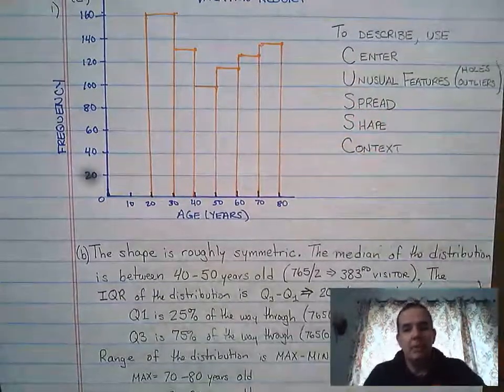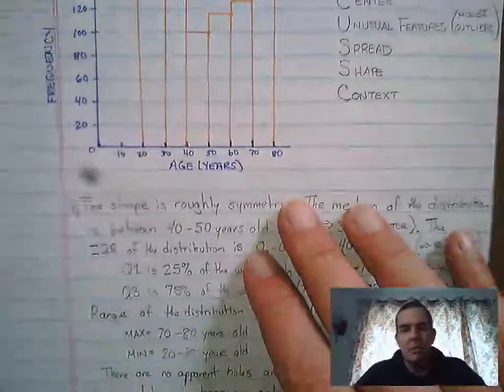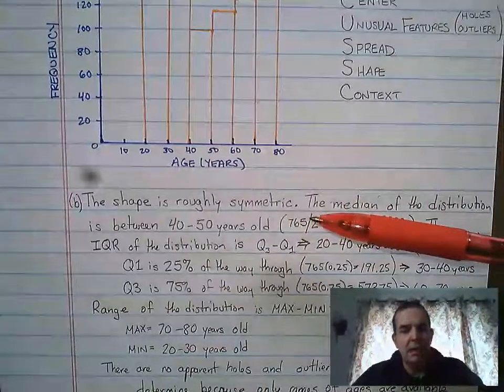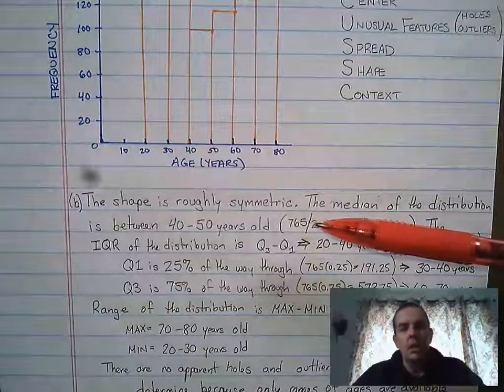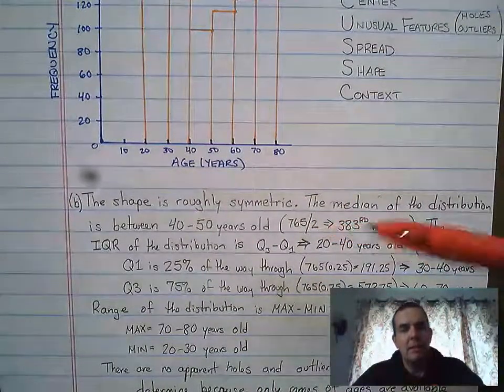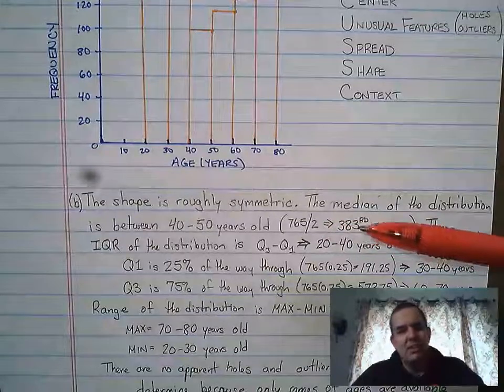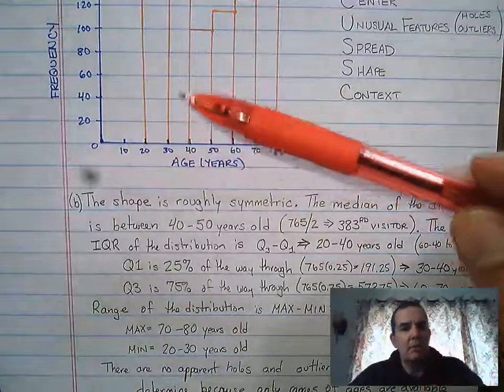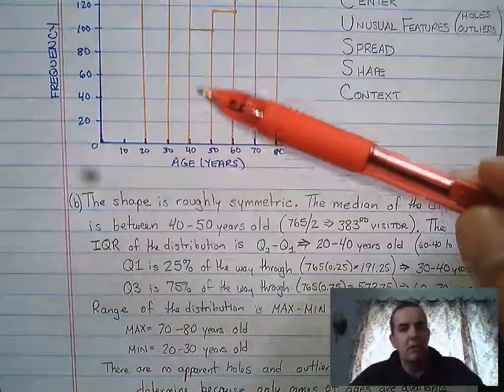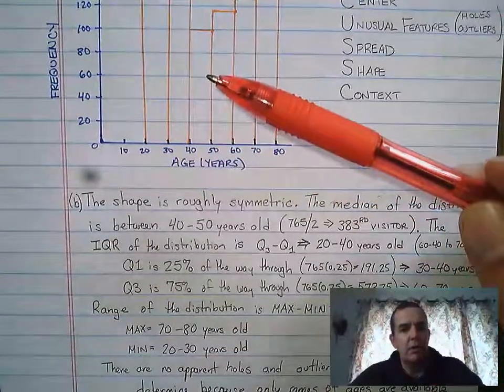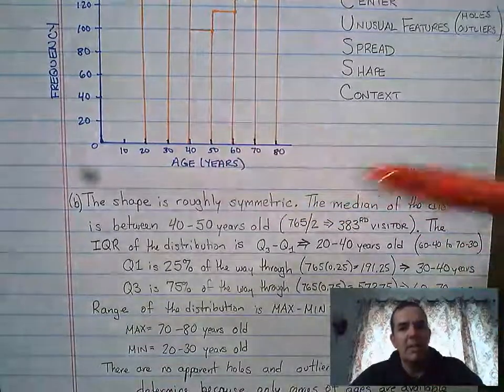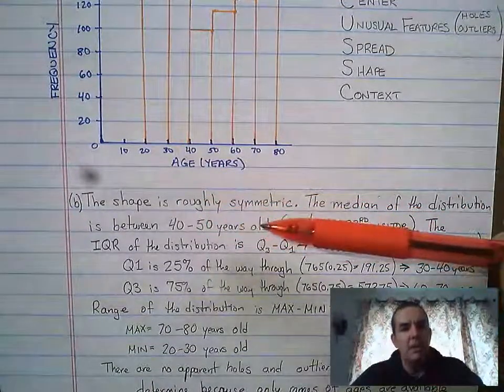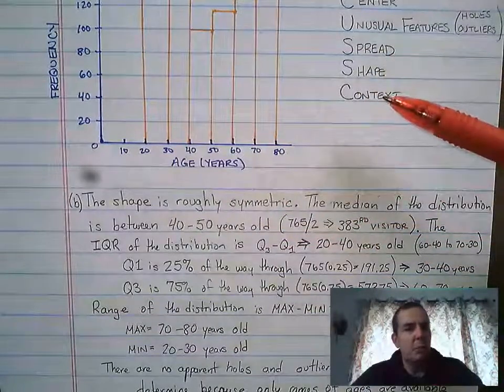And the way that I would figure out the median of this distribution is, in the problem, it explicitly says there are 765 people mentioned here. So the median is going to be the middle. So I'll divide that by two. That's going to give me the 383rd person. What I would then do is I would go and count the bars until I found 383. The 383rd person would fall in the 40 to 50 bar. Therefore, the median of the distribution is between 40 and 50 years old. And by putting years old, we hit the context point right away.